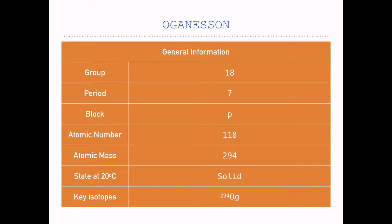It's found in group number 18, period number 7, and the P block of the periodic table. Its atomic number, or the number of protons in its nucleus, is 118. Its atomic mass, or the number of protons plus the number of neutrons, is 294.